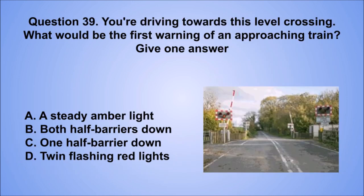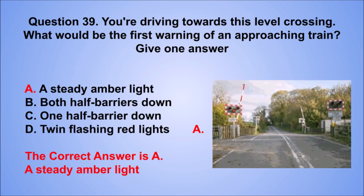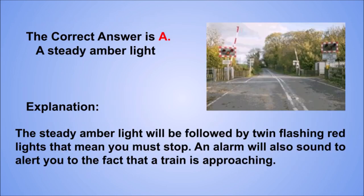Question 39. You're driving towards this level crossing. What would be the first warning of an approaching train? Give one answer. A. A steady amber light. B. Both half barriers down. C. One half barrier down. D. Twin flashing red lights. The correct answer is A, a steady amber light. The steady amber light will be followed by twin flashing red lights that mean you must stop. An alarm will also sound to alert you to the fact that a train is approaching.